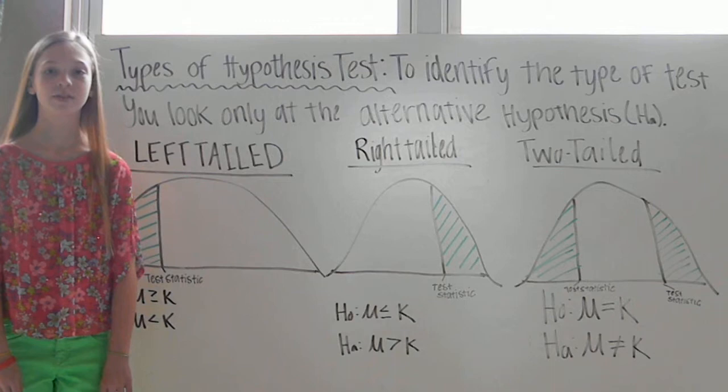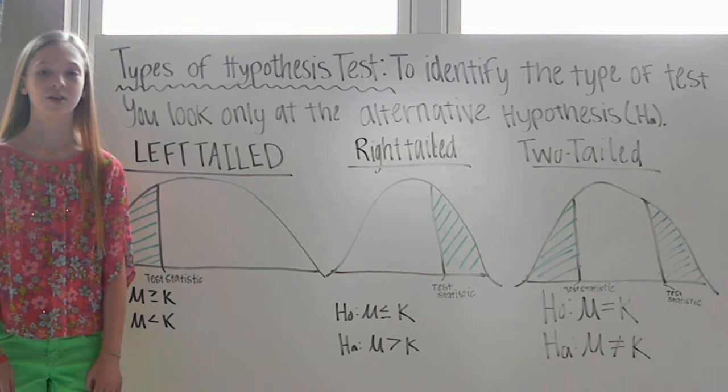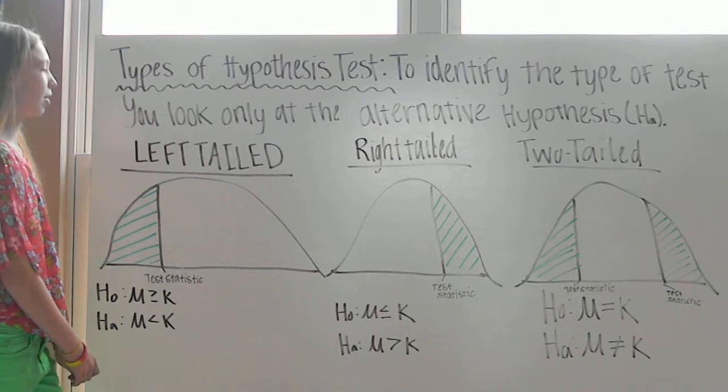Types of hypothesis tests. The type of test depends on the region of the sample distribution that favors the rejection of the null. To identify the type of test, you look only at the alternative hypothesis.